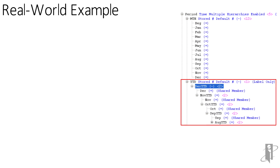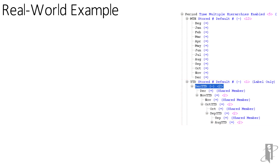The second one is a calculated hierarchy that is using year-to-date members. So you can see December year-to-date, November year-to-date, October year-to-date, etc. There is a corresponding year-to-date member for all of the members in the month hierarchy, except for beginning balance.